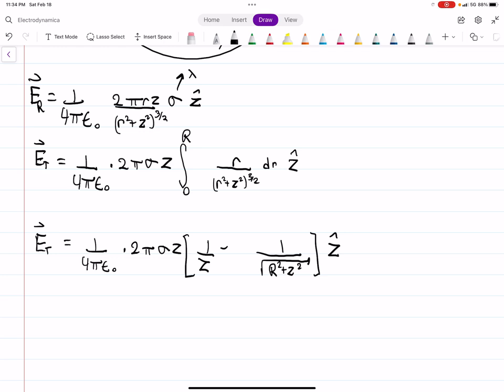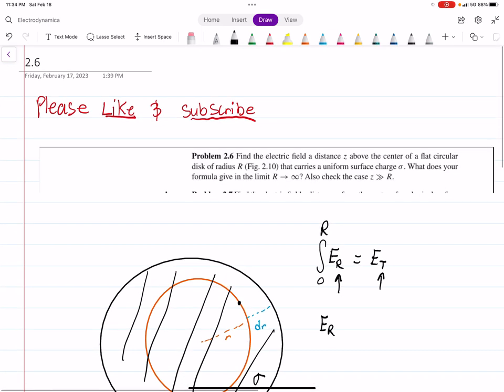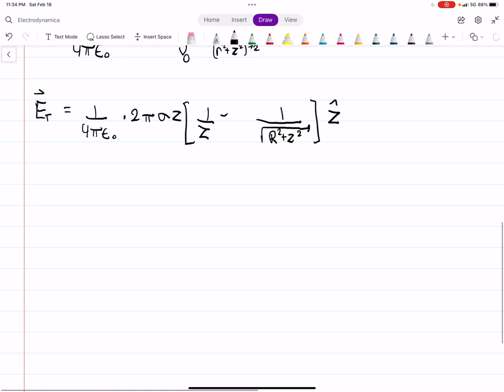Now we need to find the limiting cases. The first one is the limit as big r goes to infinity of e total. Well, if we do that, this term is essentially going to make the whole fraction here go to 0. In that case, we can just multiply through by 1 over z.